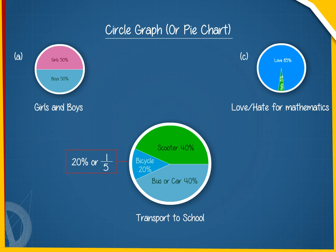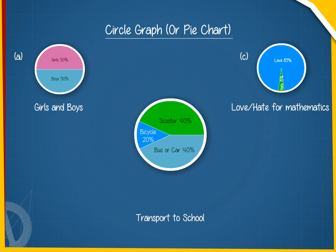20% or 1 by 5 of the circle represents bicycle. 40% or 2 by 5 represents scooter and remaining 40% or 2 by 5 represents bus or car. C.